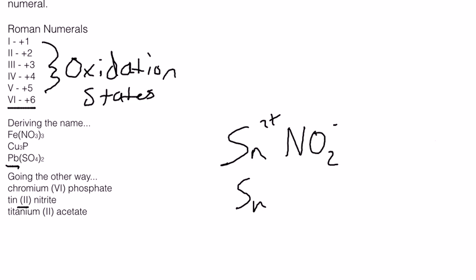And so once again, we're going to use the parentheses here. Then we're going to do Sn NO2 2. And that would be our final formula for tin nitrite.